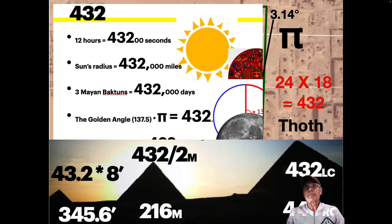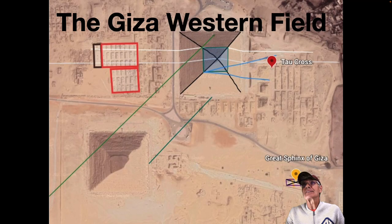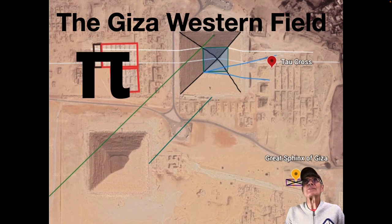And at the base of the Great Pyramid, you've got 43.2 for Menkara, 432 divided by two for Khafre. For Khufu, you've got 432. So 432, it's a constant that's used constantly at Giza. So there's the Giza western field. You've got Pi, you've got Phi, and you've got 432, the Toth constant.